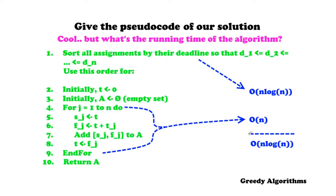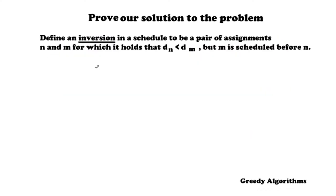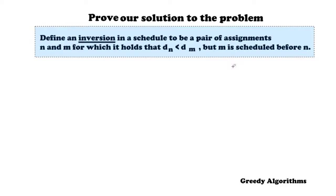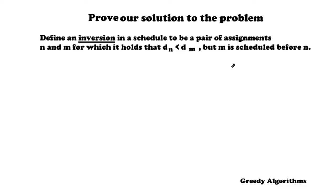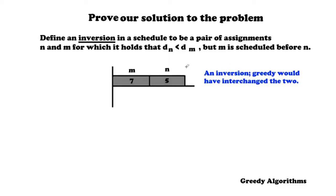Now it's time to prove that the greedy algorithm produces an optimal schedule. First we need the definition of an inversion. Define an inversion in a schedule to be a pair of assignments N and M for which the deadline of N is smaller than the deadline of M, but M is scheduled before N. We also need to prove that interchanging the assignments of a pair of an adjacent inversion does not increase the maximum lateness. Greedy avoids inversions because it schedules assignments in ascending order of deadline.